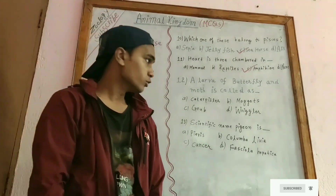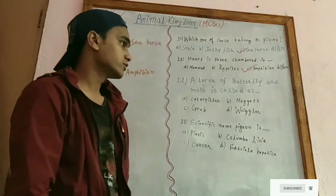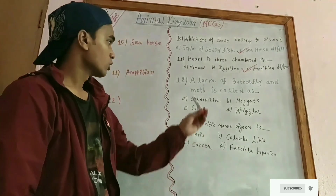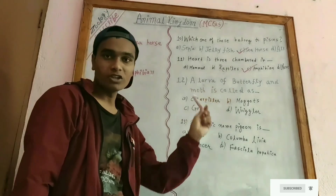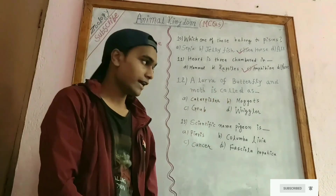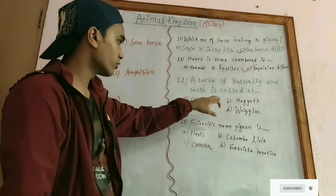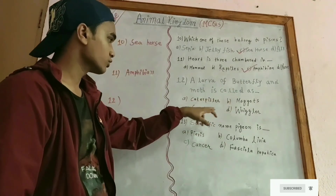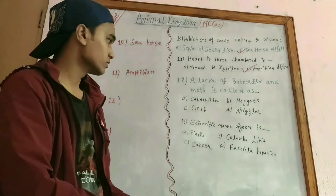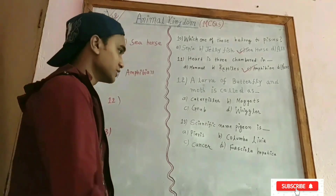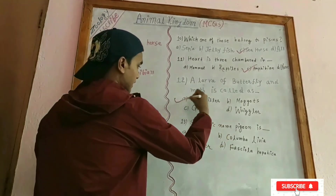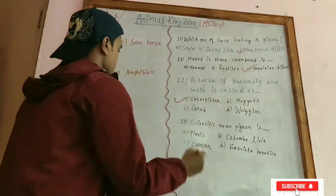Question number 12: the larva of a butterfly and moth is called a caterpillar. It is very easy to remember — the answer is caterpillar.